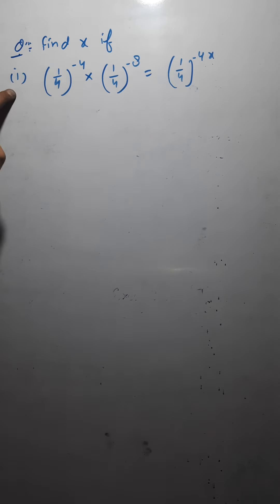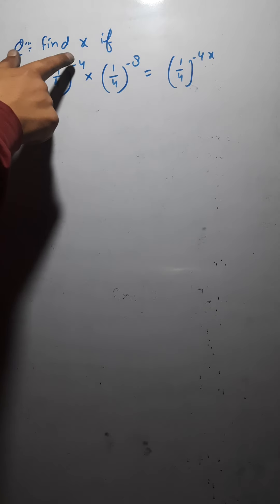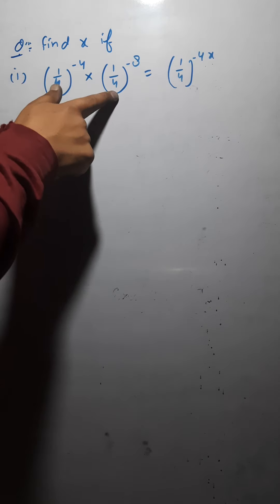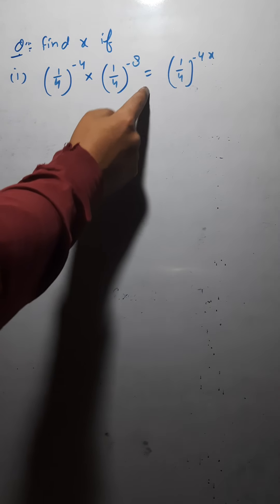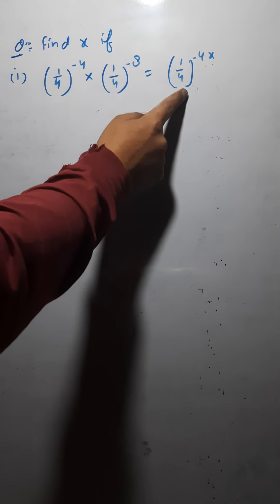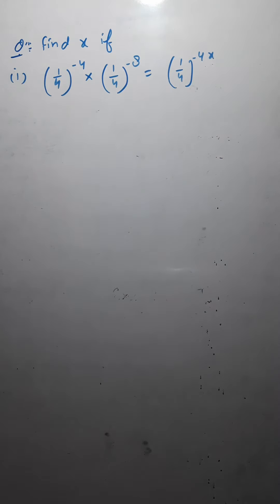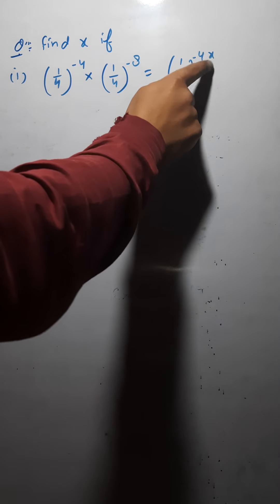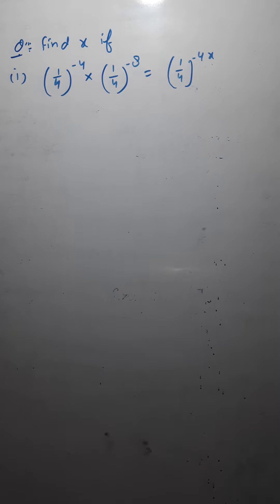The first question is: (1/4) raised to the power minus 4, multiplied by (1/4) raised to the power minus 8, is equals to (1/4) raised to the power minus 4x. You have to find out the value of x here.